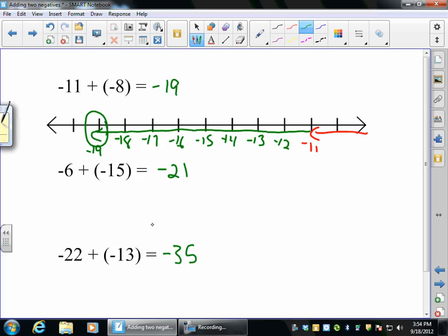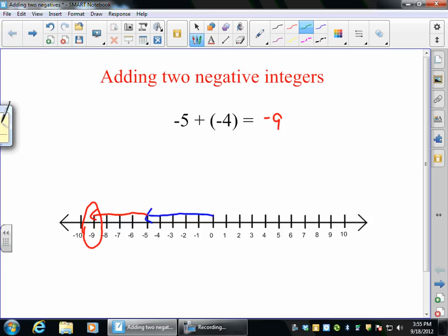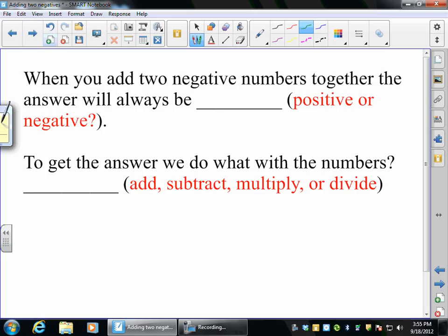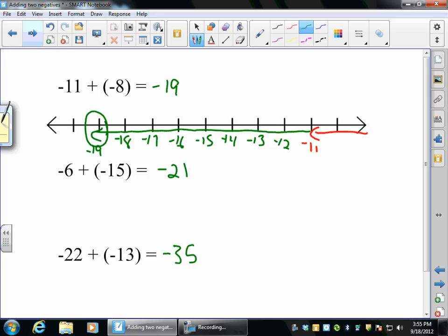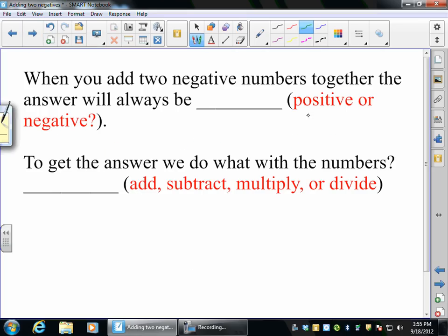So what I want you to do is look at these answers that we got for these. And now let's think about this. When you add two negative numbers together, the answer will always be, is it positive or is it negative? What did all these answers come out to be? Well, every single one of them came out to be a negative. So anytime you're going to add two negatives, you get a negative.